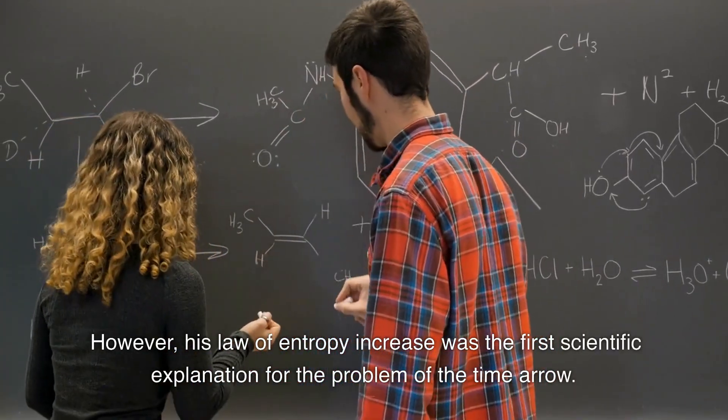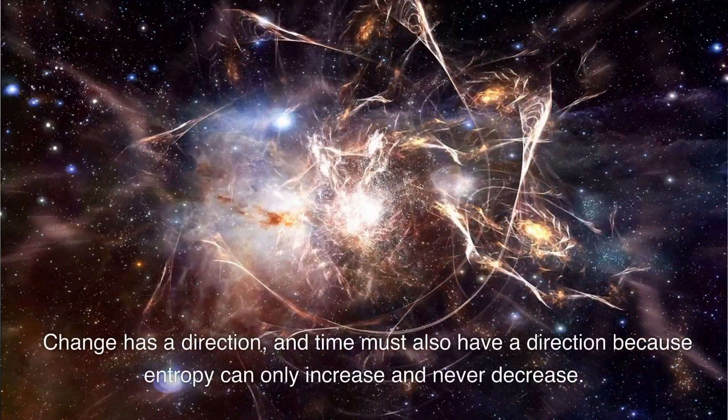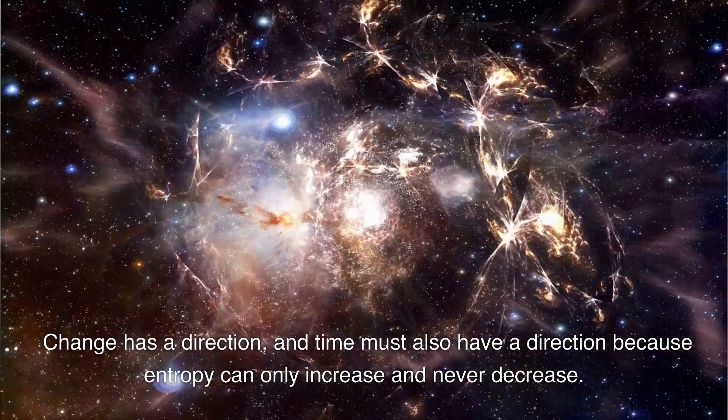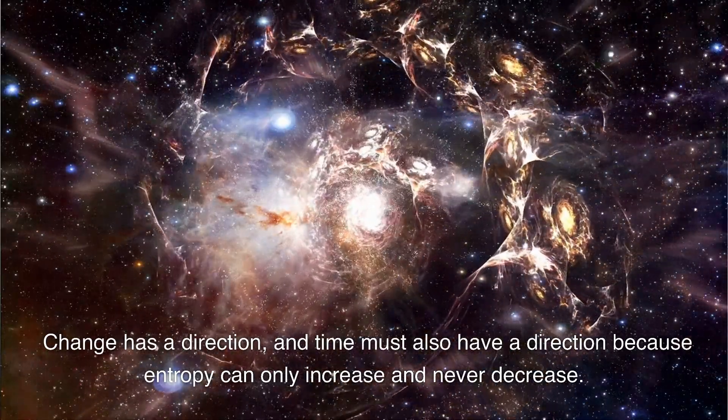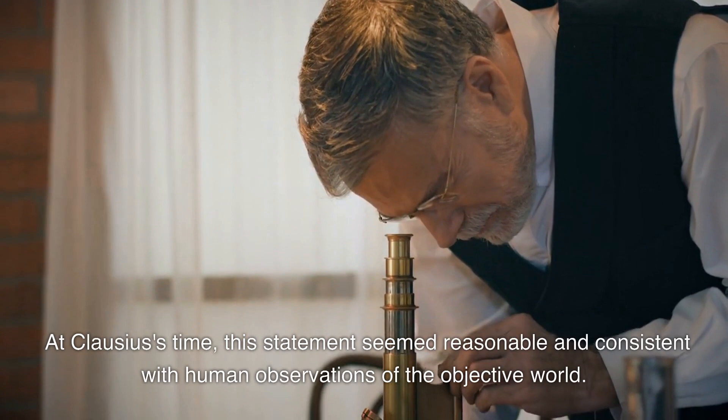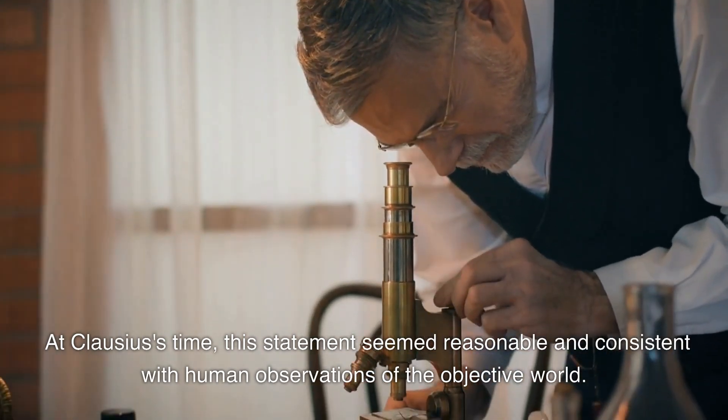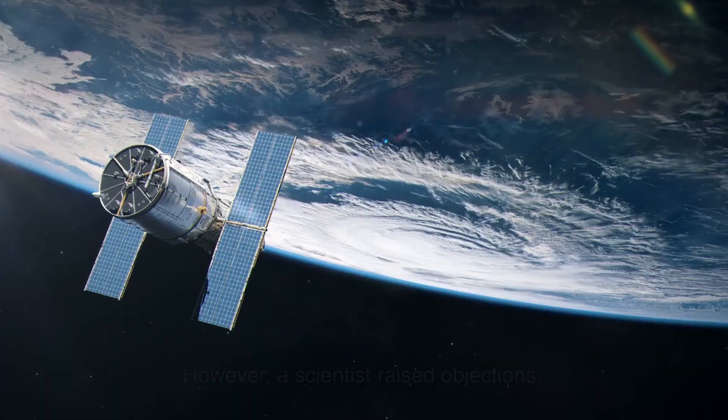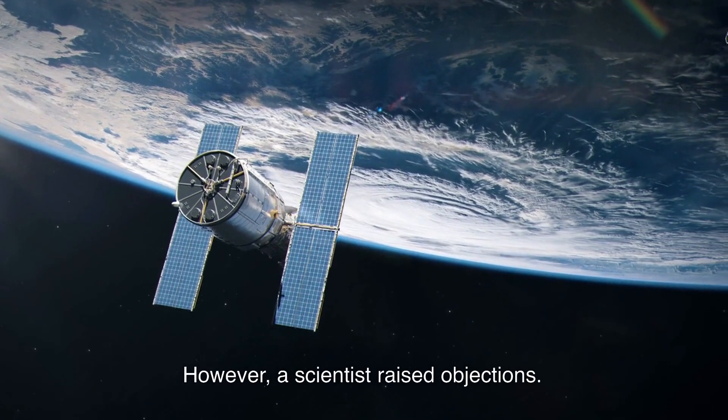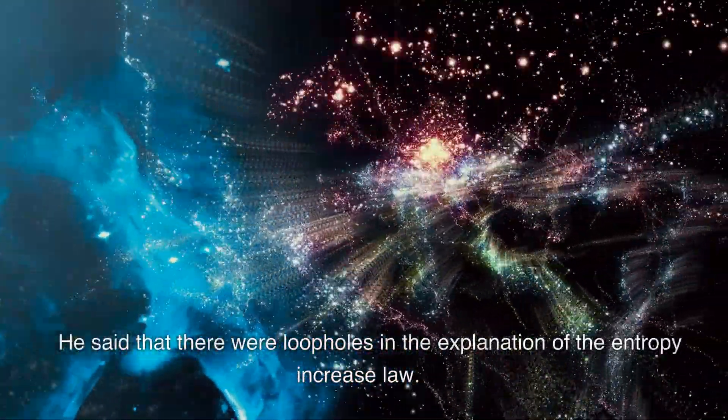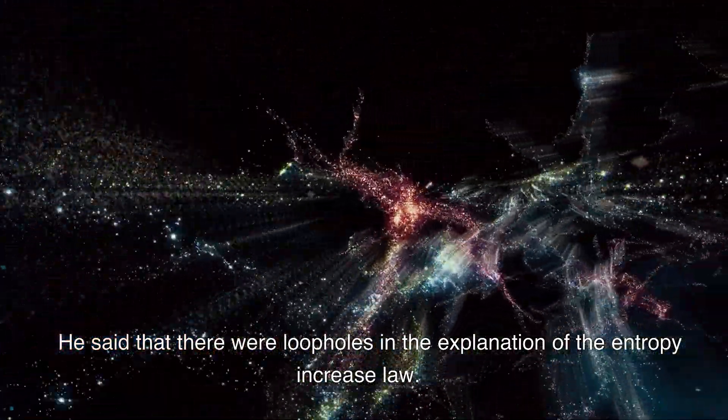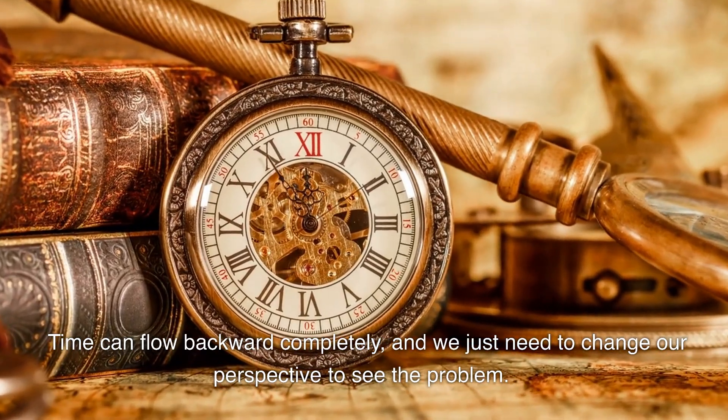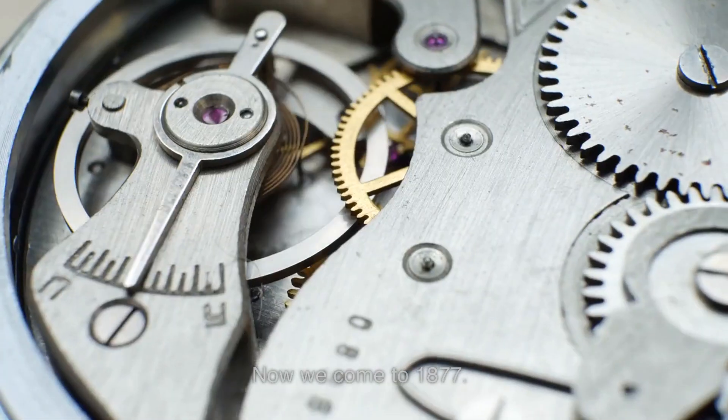Of course, Clausius did not know the Big Bang. However, his law of entropy increase was the first scientific explanation for the problem of the time arrow. Change has a direction, and time must also have a direction, because entropy can only increase and never decrease. At Clausius's time, this statement seemed reasonable and consistent with human observations of the objective world. However, a scientist raised objections. He said that there were loopholes in the explanation of the entropy increase law. Time can flow backward completely, and we just need to change our perspective to see the problem.